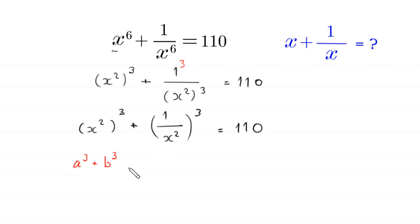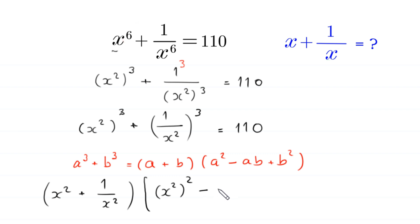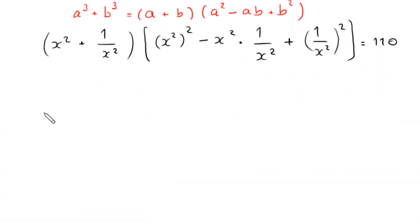Now by using the algebraic identity a³ + b³ = (a + b)(a² − ab + b²), the left-hand side can be written as (x² + 1/x²) times (x² whole squared minus x² times 1/x² plus 1/x² whole squared) is equal to 110.